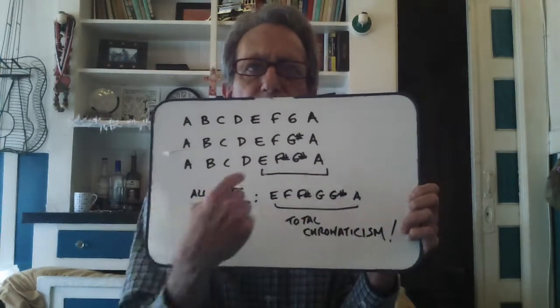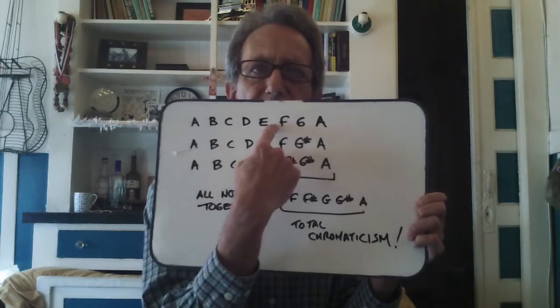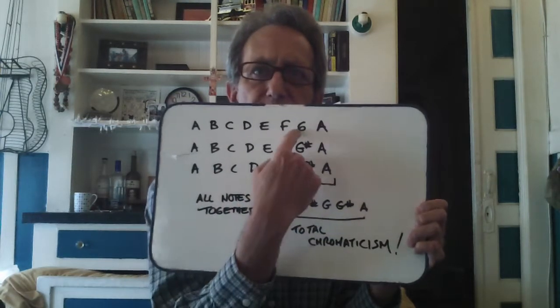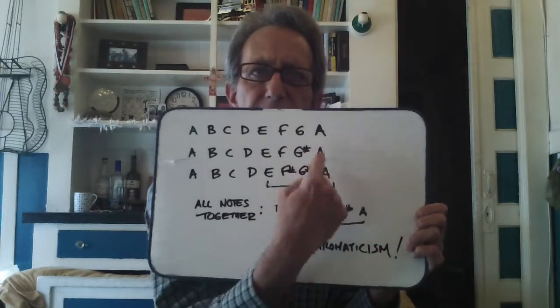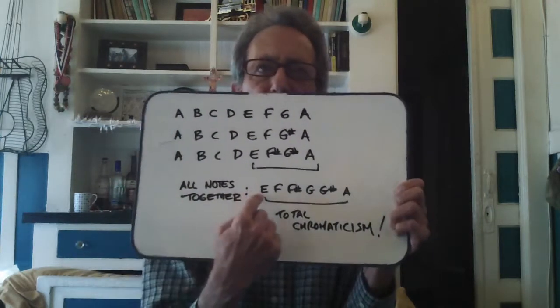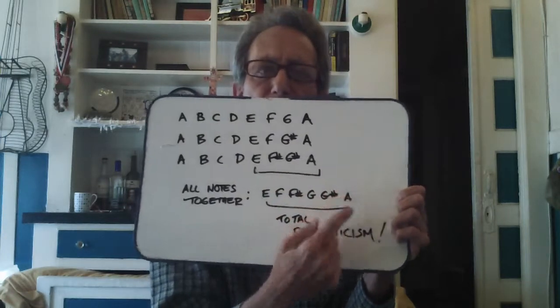We're looking at the last bunch of notes from the fifth step up to the first step of the scale. In A minor, we have E, F, F-sharp, G, G-sharp, and A. What I'm going to do is take all of those notes — E, F, F-sharp, G, G-sharp, and A — and put them together, since we can and indeed must blend them.